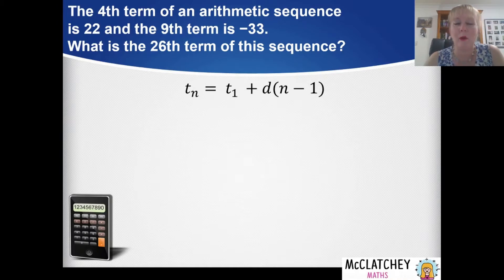So let's take the information from our problem and substitute that into the general form. I've got term 4 equals 22 which equals the first term plus d times 4 minus 1, which is n is 4.